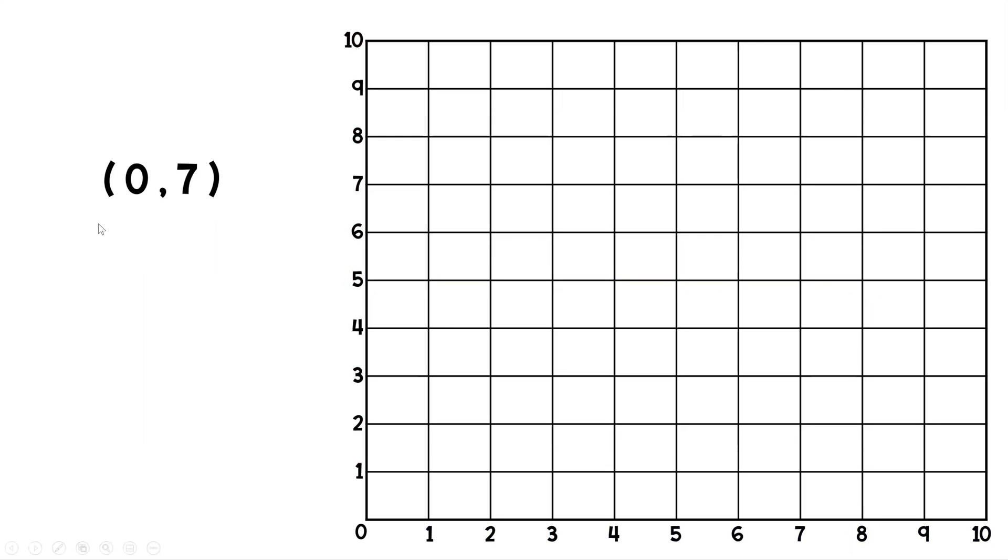Let's try another one here. Let's say we have 0, 7. Okay, we're starting with 0 and then 7. So we're going to start with, again, our x-axis, which is 0. Let's find 0 on the x-axis, right there. Now, we're going to find the 7 on our y-axis, which is right there. So notice where we put our point.